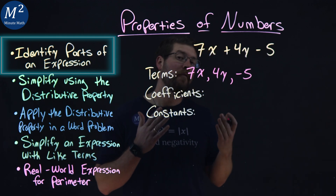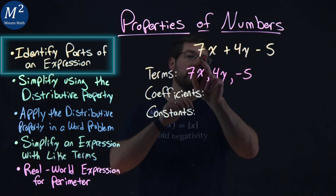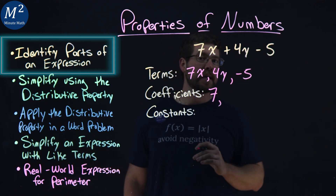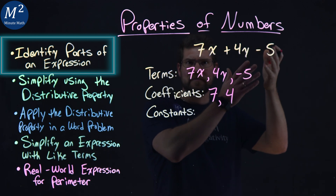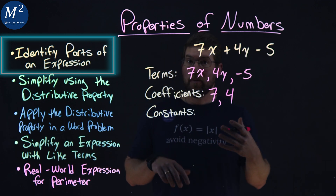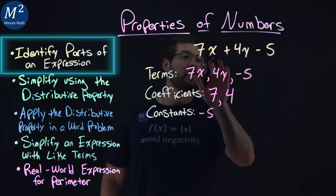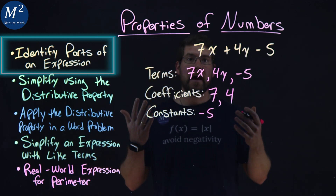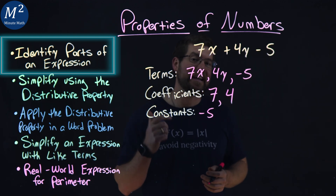What about the coefficients? The coefficients are the numbers that are in front of our variables, our letters x and y. So our first coefficient is that 7, which is in front of the x, and our second coefficient in front of y is a 4. There's no coefficient at the end because there's no variable there. Lastly, our constants — these are the numbers without a variable, and that's just going to be this minus 5 by itself. The other terms have variables, so our constant is negative 5. There's only one of them. And there we have it: we identified the terms, coefficients, and constants of 7x plus 4y minus 5.